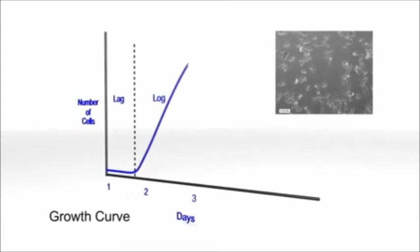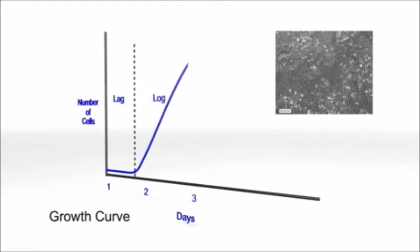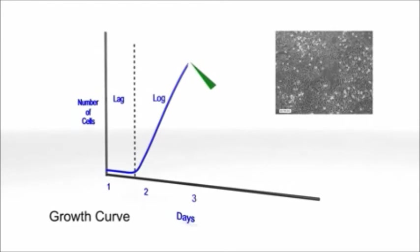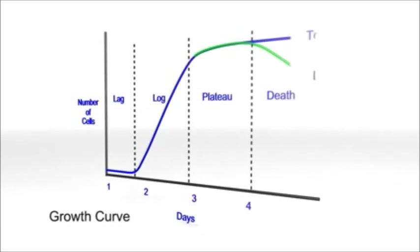During logarithmic or log phase, most of the cells are actively proliferating, resulting in an exponential increase in cell numbers. The latter stage of this phase provides the best conditions for subculture. Following this rapid cell growth, the rate of proliferation slows down and the cells reach plateau phase as they become confluent. Finally, there is a rapid death phase due to apoptosis as the culture depletes nutrients and toxins are accumulated.